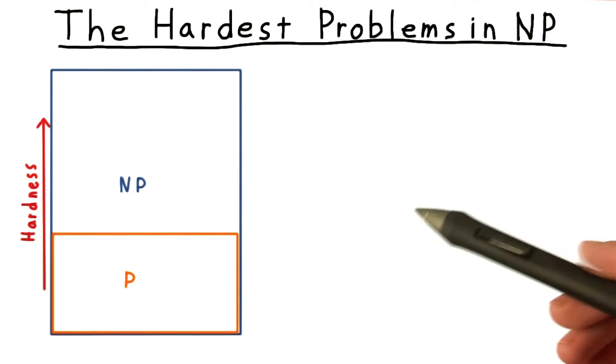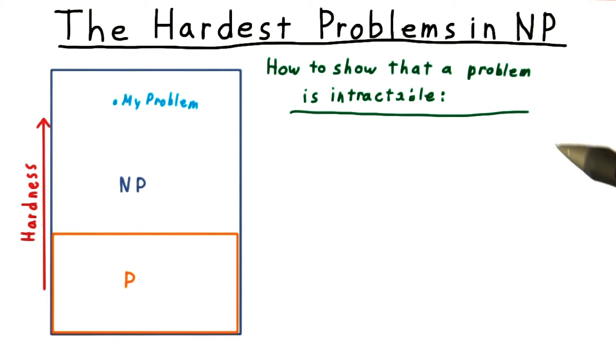Unfortunately, your boss, or maybe your advisor, doesn't agree with you and keeps asking for an efficient solution. How would you go about showing that the problem is in fact intractable?